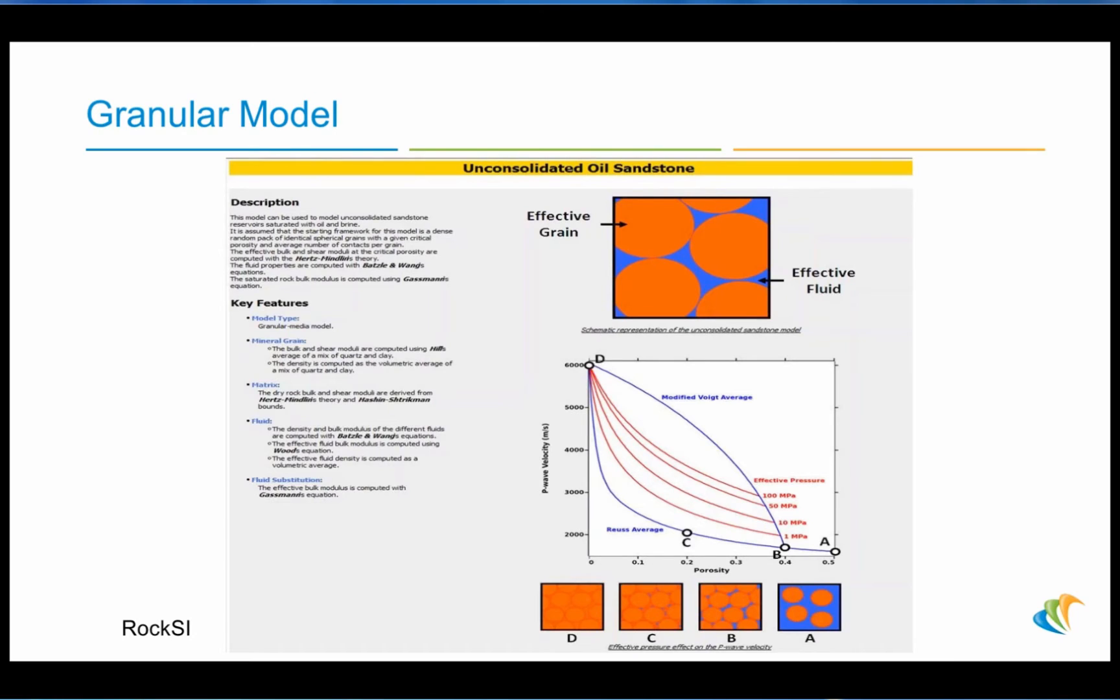For each model that we already have in RockSI, there is a help sheet. The help sheet will explain about the model. It will have a description, key features, and other information. Here's the sheet for the unconsolidated oil sandstone. You see the cross-plot of porosity and P-wave velocity. Then you see different packs, grains with different porosities, and you see how they lie on the Reuss average. Then you see varying effective porosities as we head up towards the modified Voigt average.